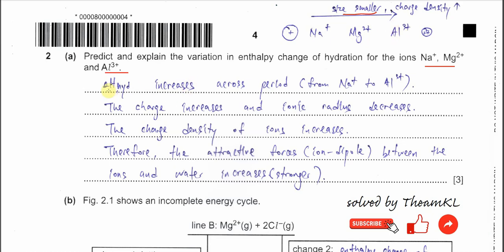Now this is the answer. The enthalpy change of hydration increases across the period — it becomes more exothermic. The reason it increases: the charge increases and the ionic radius decreases. Charge goes from 1+ to 2+ to 3+, and the ionic radius becomes smaller. Therefore, the charge density of the ion increases, and this is what gives stronger attraction to water.